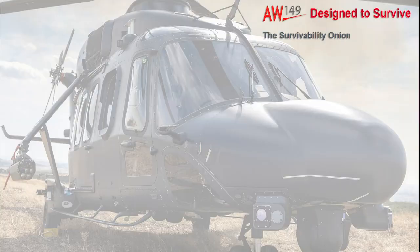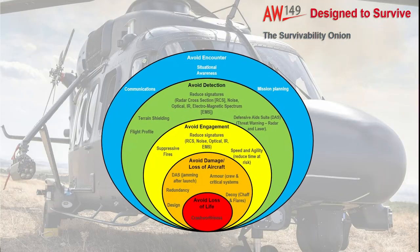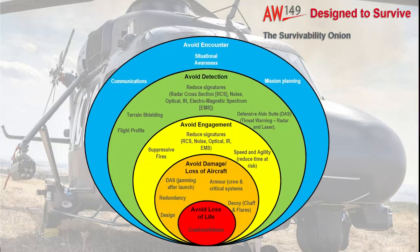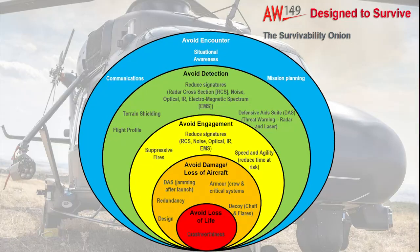The survivability onion represents successive layers of an aircraft's survivability defences. If these defences are breached, aircraft survivability may become degraded, making the aircraft more susceptible to ongoing threats. The onion can be paraphrased as: don't be seen; if seen, don't be targeted; if targeted, don't be hit; if hit, don't be penetrated; and finally, if penetrated, don't be killed.